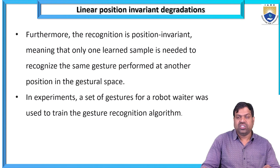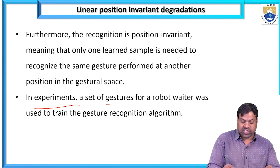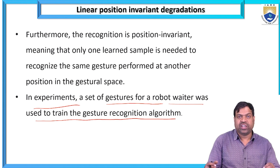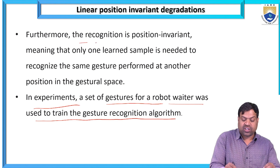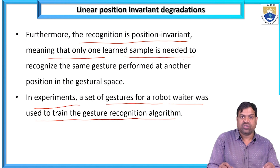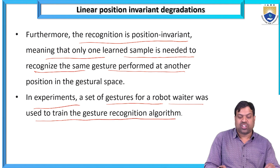The recognition is position invariant, meaning that only one training sample is needed to recognize the same gesture performed at another position in the gestural space. In experiments, a set of gestures for a robot was used to train the gesture recognition algorithm.